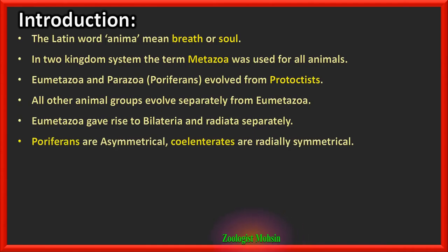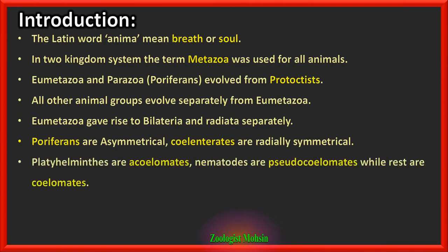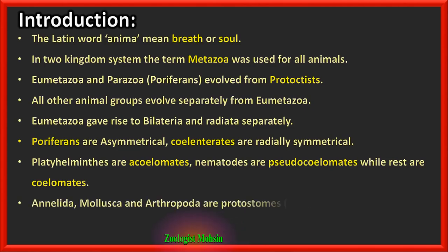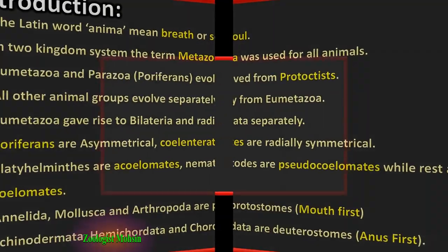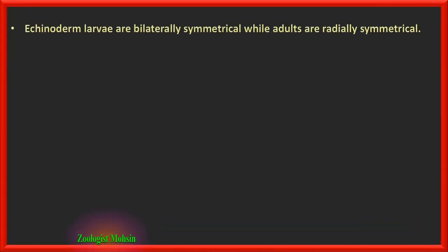Poriferans are asymmetrical while Coelenterates are radially symmetrical animals. Platyhelminthes are acoelomates without coelom; nematodes are pseudocoelomates having a false coelom; while the rest of the phyla are coelomates with a true body cavity. The phyla Annelida, Mollusca, and Arthropoda are among the protostome phyla in which the mouth forms first during development, while Echinodermata, Hemichordata, and Chordata are deutostome phyla in which the anus forms first.